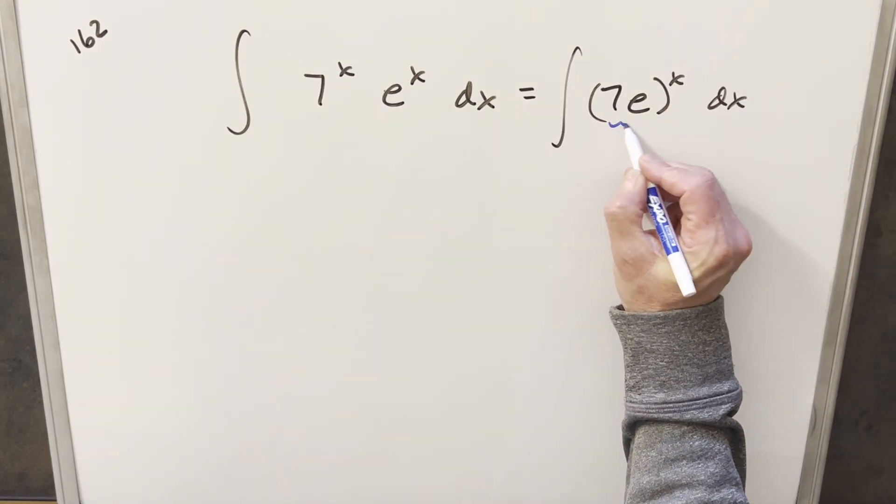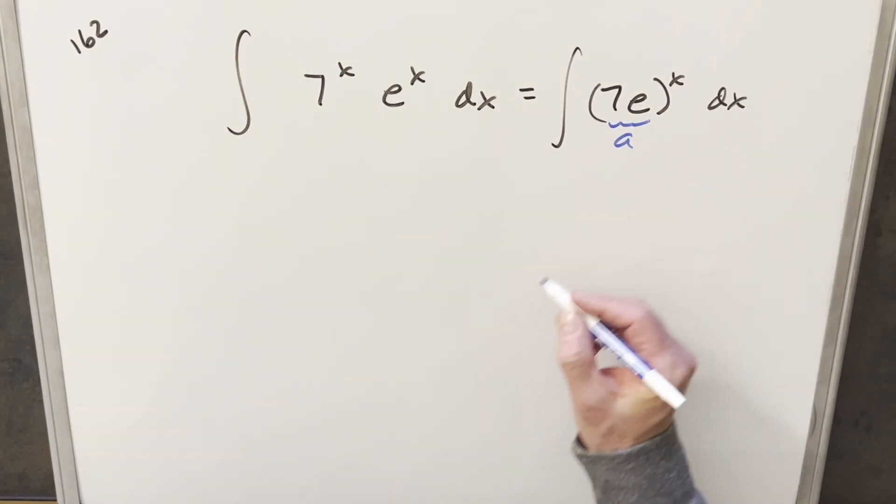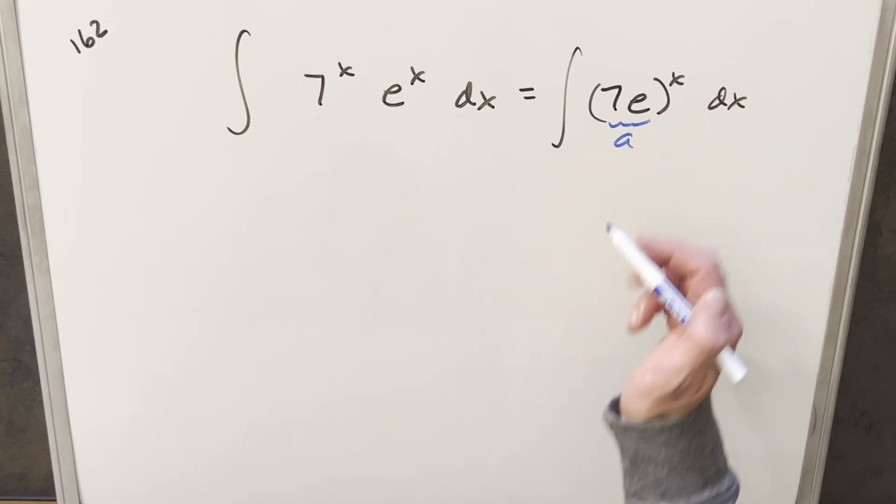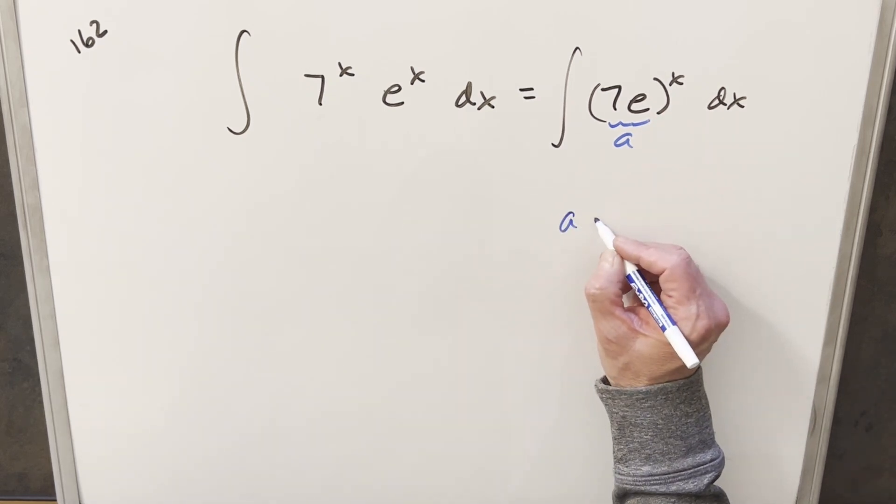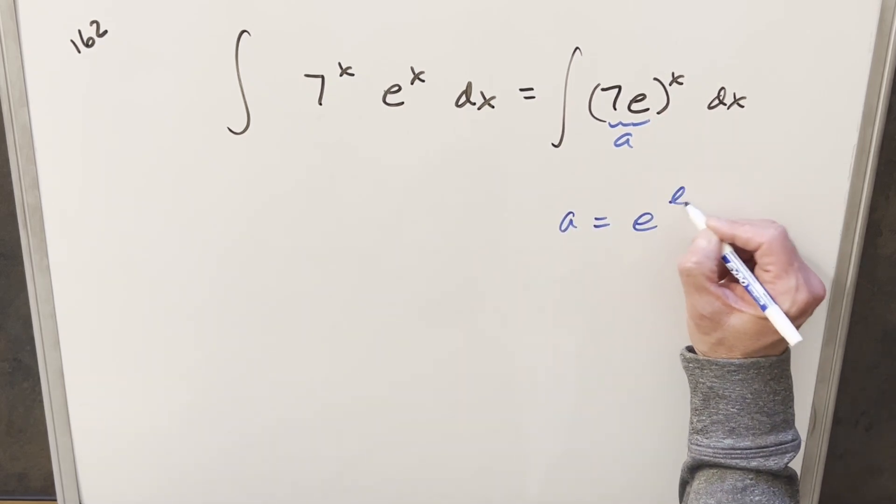What we have here is just a constant, let's call this a. When we have a constant for the base, we can use this trick where we write a as e to the ln a.